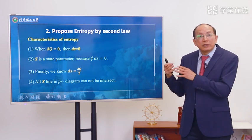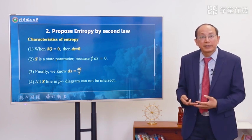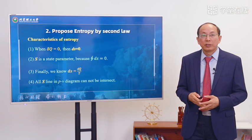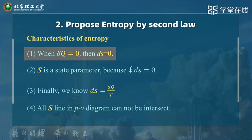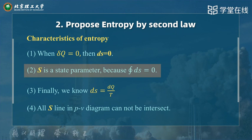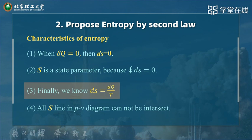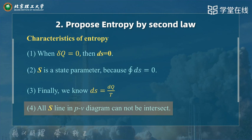From this picture and statement, we can obtain the characteristics of entropy. First, when q is 0 then dS is certainly 0. Second, S is a state parameter because the cyclic integral of dS is 0. Third, we have dS equals dq over T. Fourth, all S lines in the PV diagram cannot intersect each other.